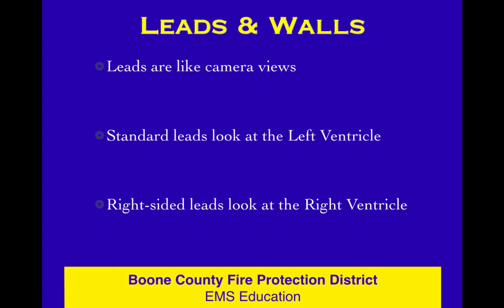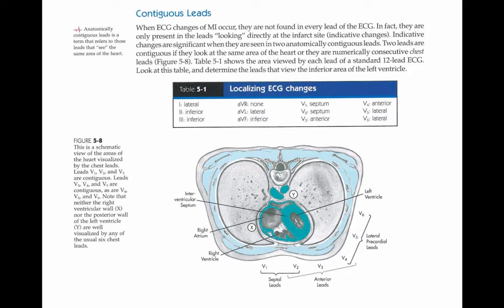Our standard leads look at the left ventricle. We can move some and get a look at the right ventricle. We may need to move some standard leads to get a look at some walls of the left ventricle that aren't being seen. Contiguous leads matter — contiguous means they are looking at the same wall, or they are physically next to each other, where we're talking about the chest leads. Lead 2, Lead 3, and AVF are contiguous. V1 and V2 are contiguous. V2 and V3 are physically next to each other. That's contiguous leads.